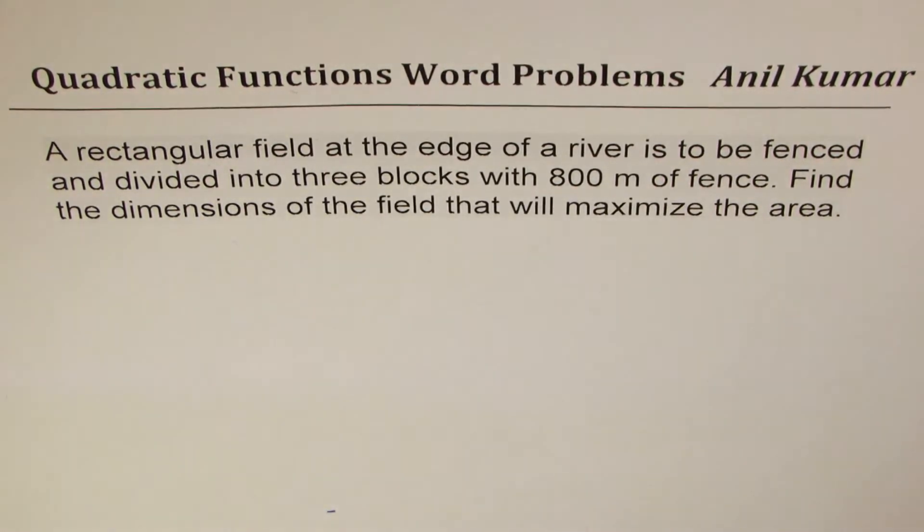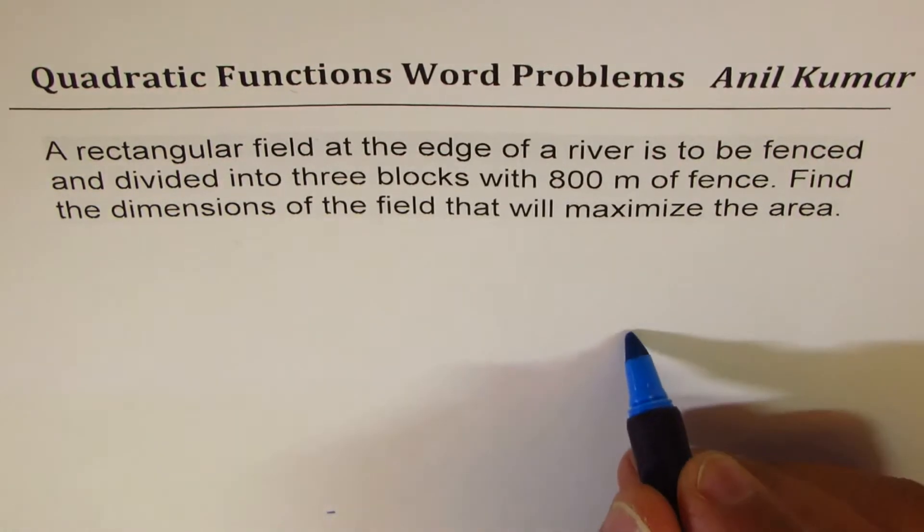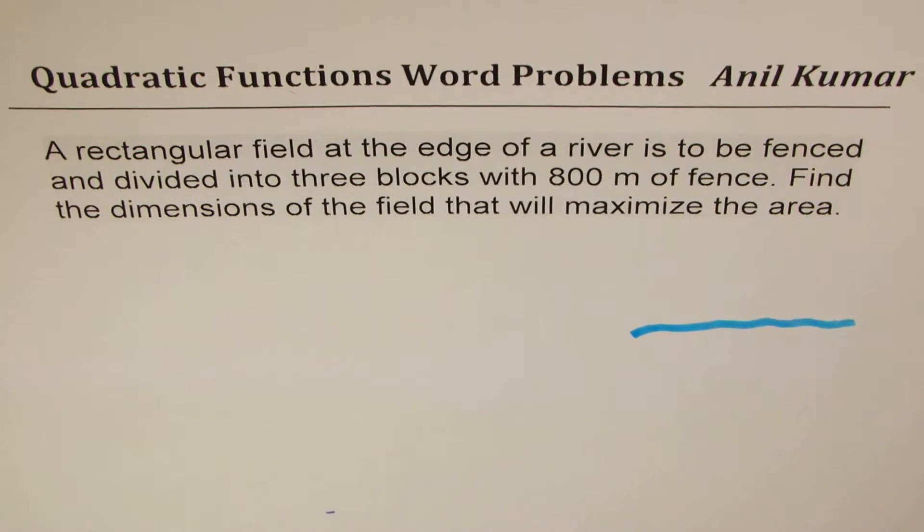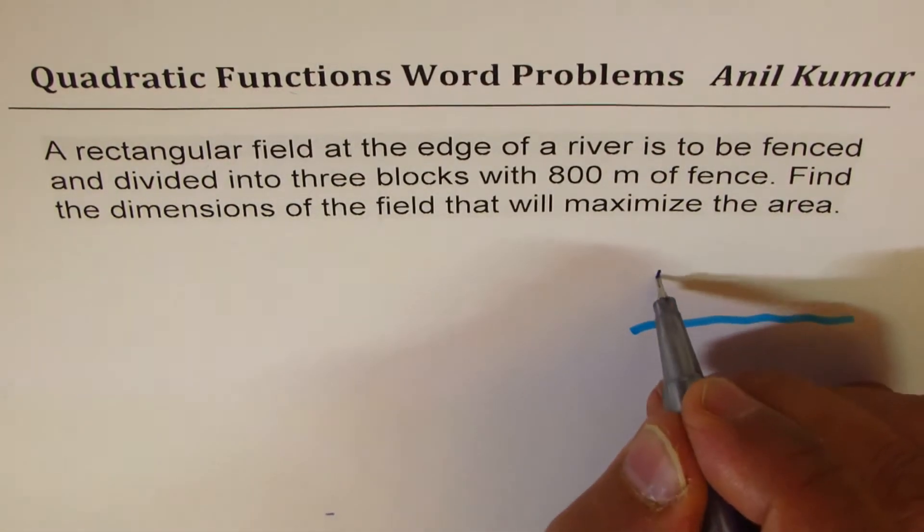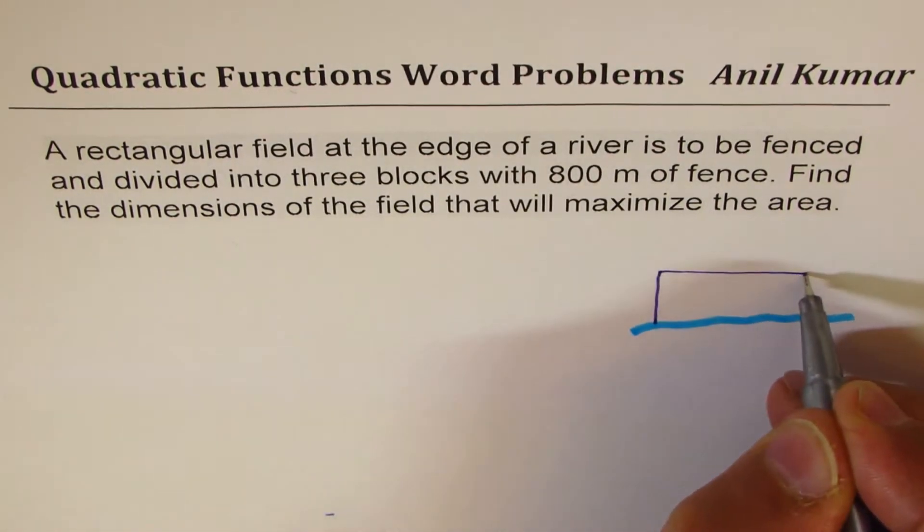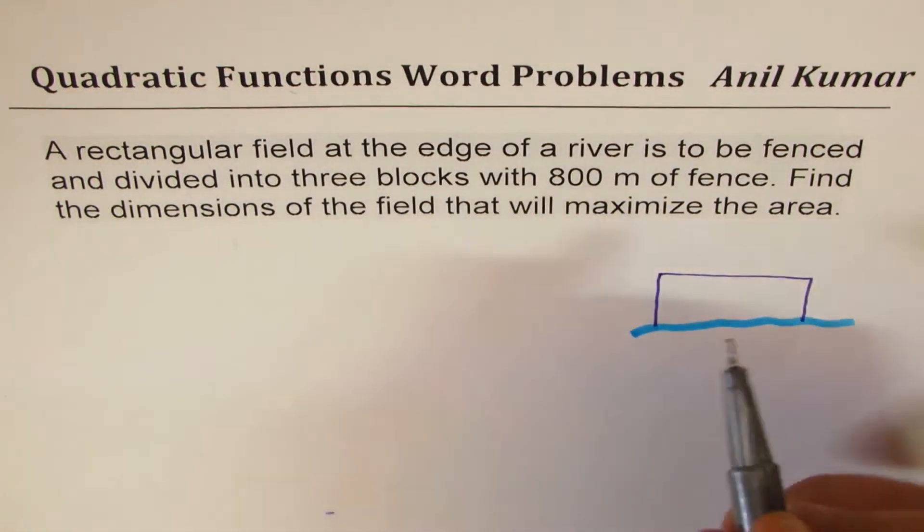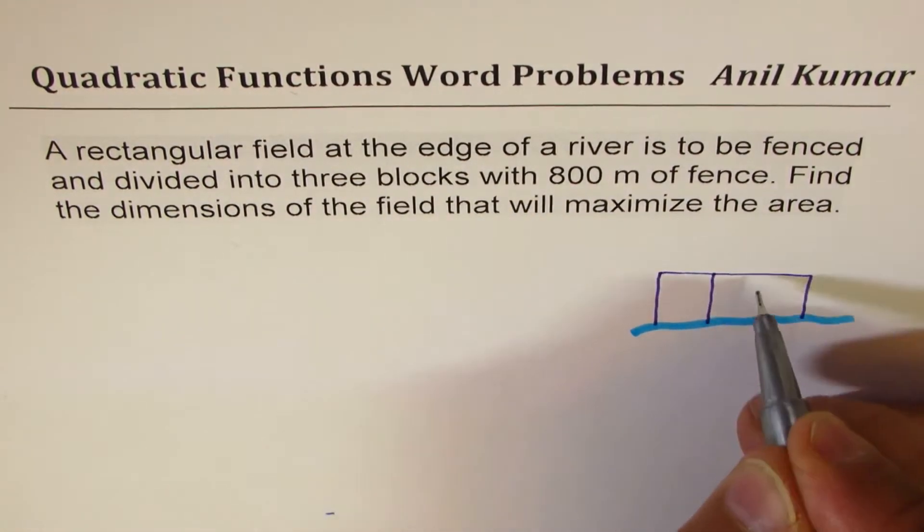So let's try to visualize it. Let's say that's the river and we have a rectangular field here with fence, and we need to have three blocks. So let these be the three blocks.